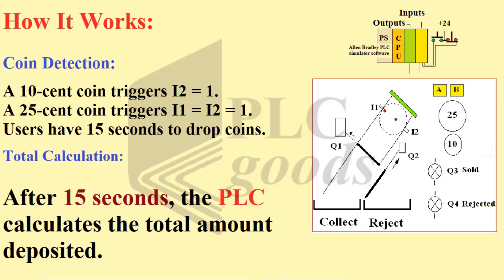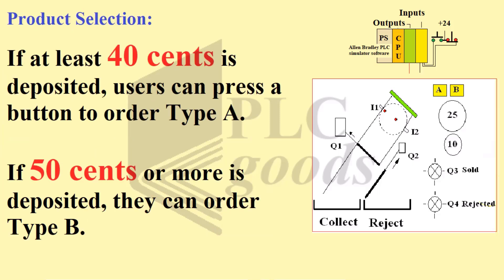Total Calculation: After 15 seconds, the PLC calculates the total amount deposited. Product Selection: If at least $0.40 is deposited, users can press a button to order Type A. If $0.50 or more is deposited, they can order Type B.